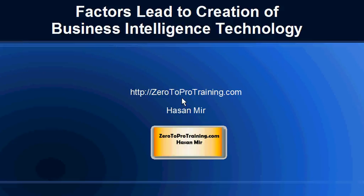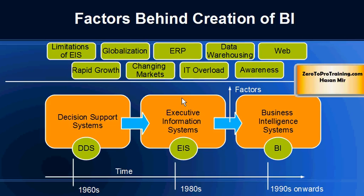In this session we will talk about the factors that led to the creation of business intelligence technology. This is Hassan Meir from zerotoProtraining.com. In the previous session we talked about the evolution of business intelligence — how decision support systems came into the picture, they had their drawbacks, then executive information systems were born, they had their drawbacks too, so that led to the creation of business intelligence systems. However, there were other factors that affected the creation of this new breed, and we are going to talk about those factors in this session.